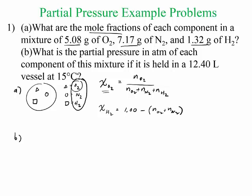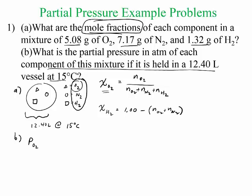So for part B, it says what's the partial pressure in atmosphere of each component of this mixture if it's held in a 12.4 liter container at 15°C? So this container is 12.40 liters and it's at 15 degrees Celsius. They say what is the partial pressure? So the pressure of O2, usually these types of problems you're going to use what you got in part A to answer stuff that they ask about in part B. So this problem is no different. You're going to use the mole fraction. So if you want the partial pressure of O2, you would use the fraction of O2 times the total pressure. The mole fraction times the total pressure.